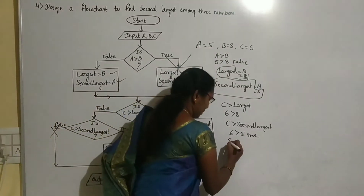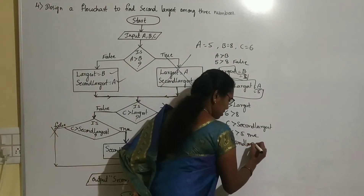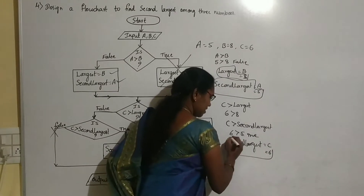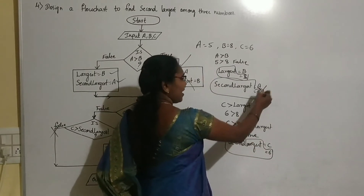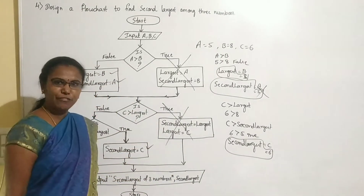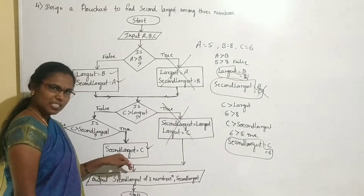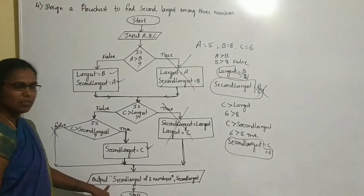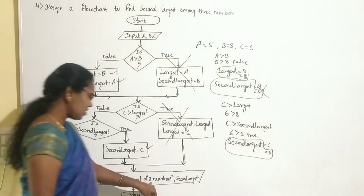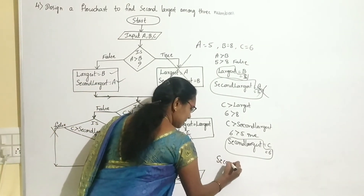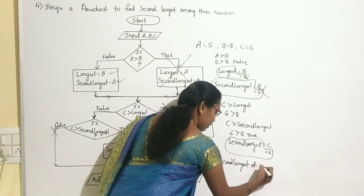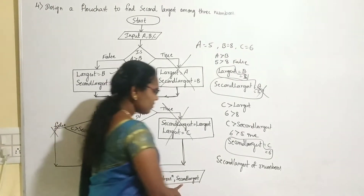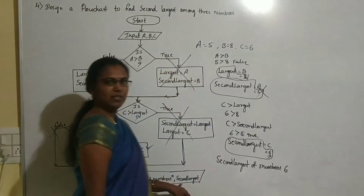We substitute values: second largest is 5 and C is 6. Is 6 greater than 5? Yes — the condition is true. So the statement second largest = C is executed. C contains 6, so 6 is stored in second largest, replacing the old value of 5. The output is: second largest of 3 numbers = 6.